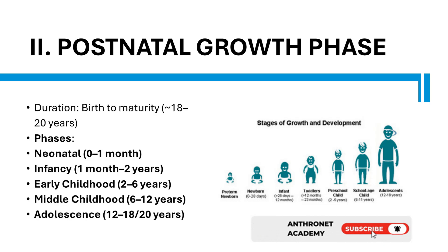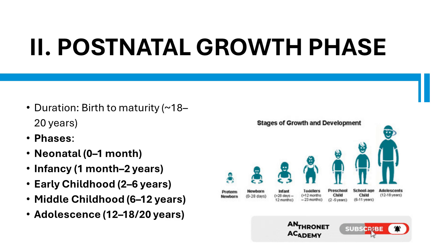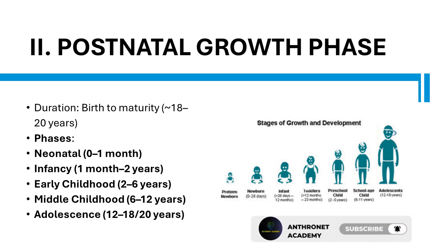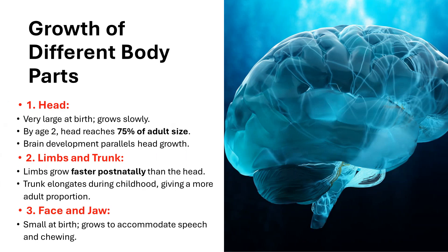Postnatal growth phase — duration: birth to maturity, 18–20 years. Phases: Neonatal (0–1 month), Infancy (1 month–2 years), Early childhood (2–6 years), Middle childhood (6–12 years), Adolescence (12–18/20 years). Growth of different body parts: the head is very large at birth and grows slowly; by age 2, the head reaches 75% of adult size, and brain development parallels head growth.